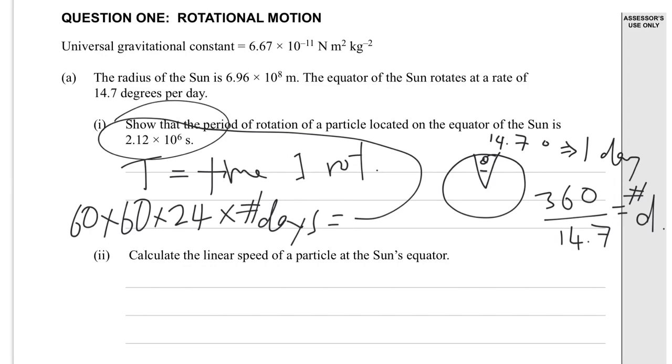Going on, part two. Calculate the linear speed of a particle at the Sun's equator. So linear speed. Linear means we don't worry about it being a vector. And that's because it's changing direction constantly as it travels around in that circle. So we can't calculate it as a vector. We could do an average speed, I suppose, which is coming back to this linear speed.